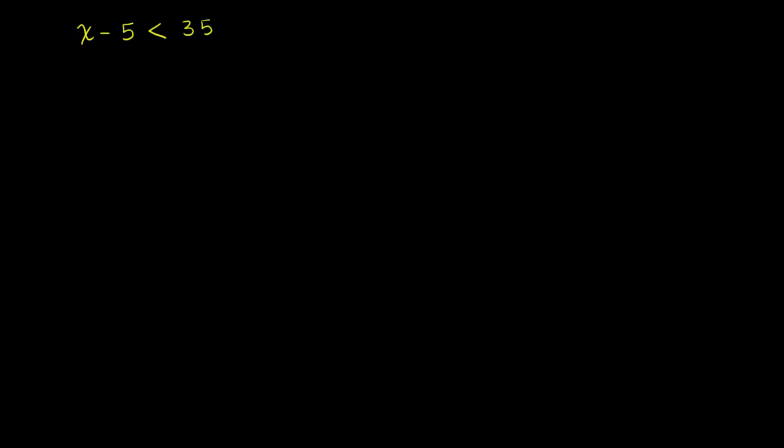So the way we do that is essentially the same way that we solved any equations. We want to get just the x terms, in this case on the left-hand side. So I want to get rid of this negative 5. And I can do that by adding 5 to both sides of this equation. That won't change the inequality, it won't change the less than sign. If something is less than something else, something plus 5 is still going to be less than the other thing plus 5. So on the left-hand side, we just have an x. This negative 5 and this positive 5 cancel out. x is less than 35 plus 5, which is 40. And that's our solution.